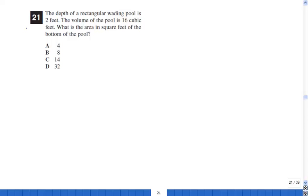Problem 21. The depth of a rectangular wading pool is 2 feet. The volume of the pool is 16 cubic feet. What is the area in square feet of the bottom of the pool?